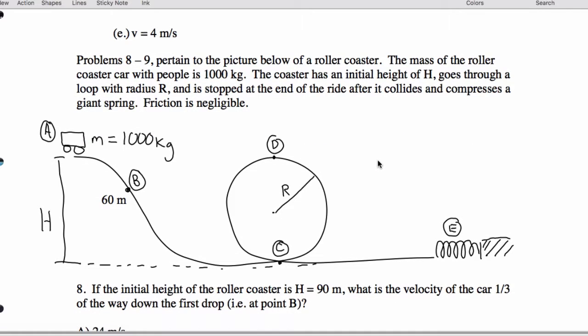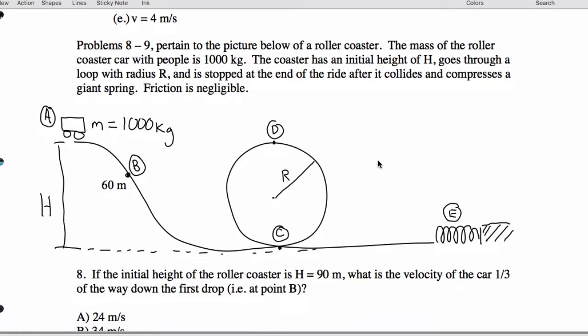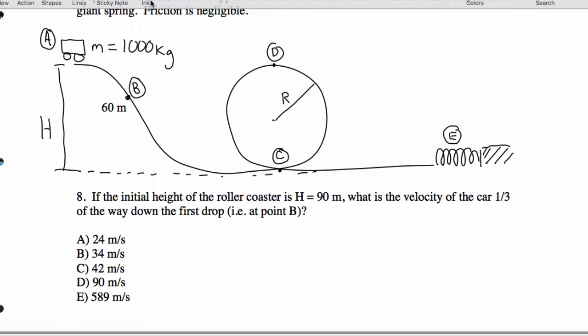All right, questions 8 and 9. So we have a roller coaster at height H and it gets to point B, and we want to know the speed right here. So let's actually do an energy bar graph. At position A I have all gravitational energy, and at position B I've got gravitational energy and kinetic energy.